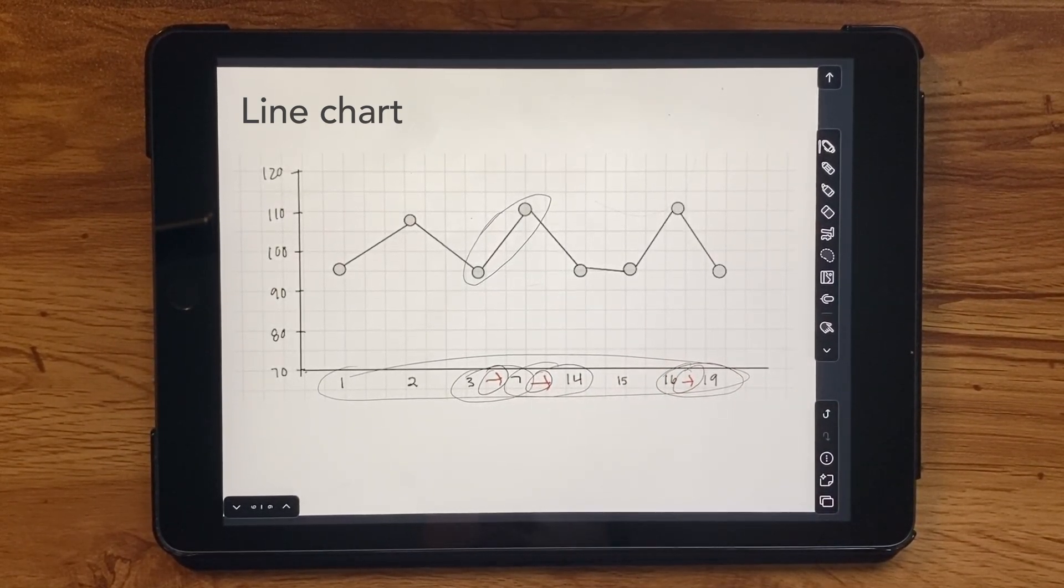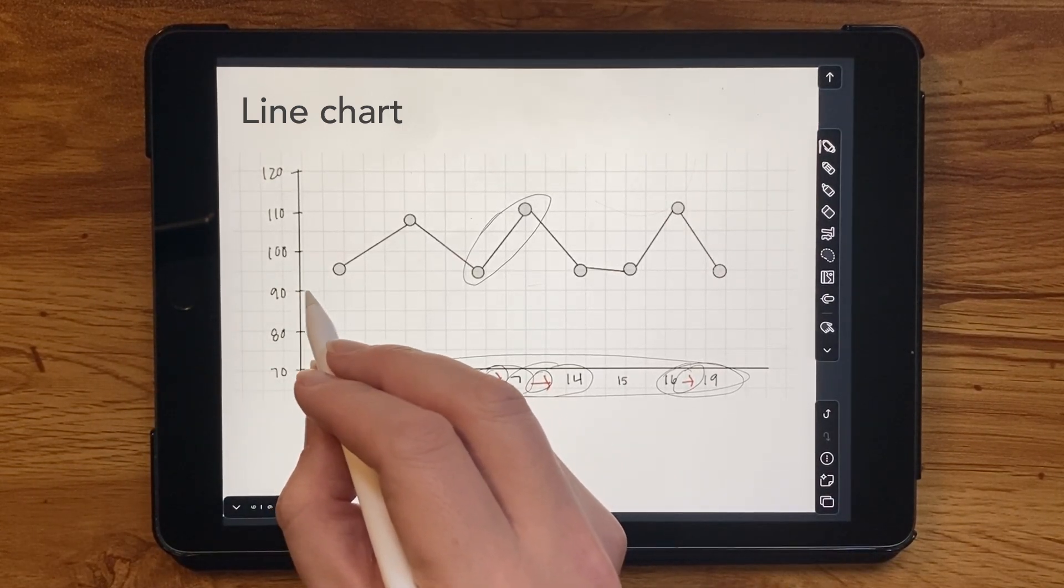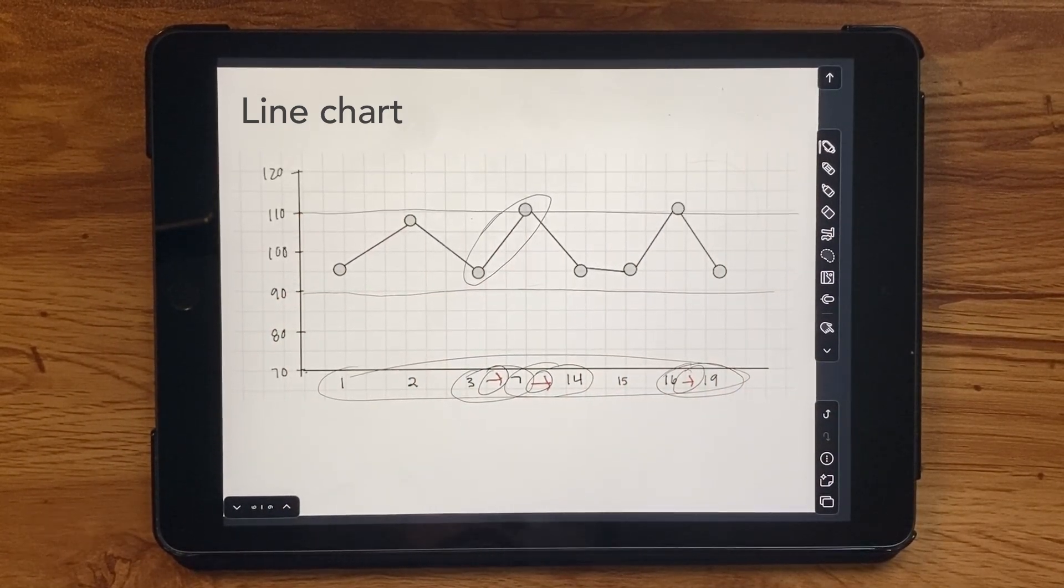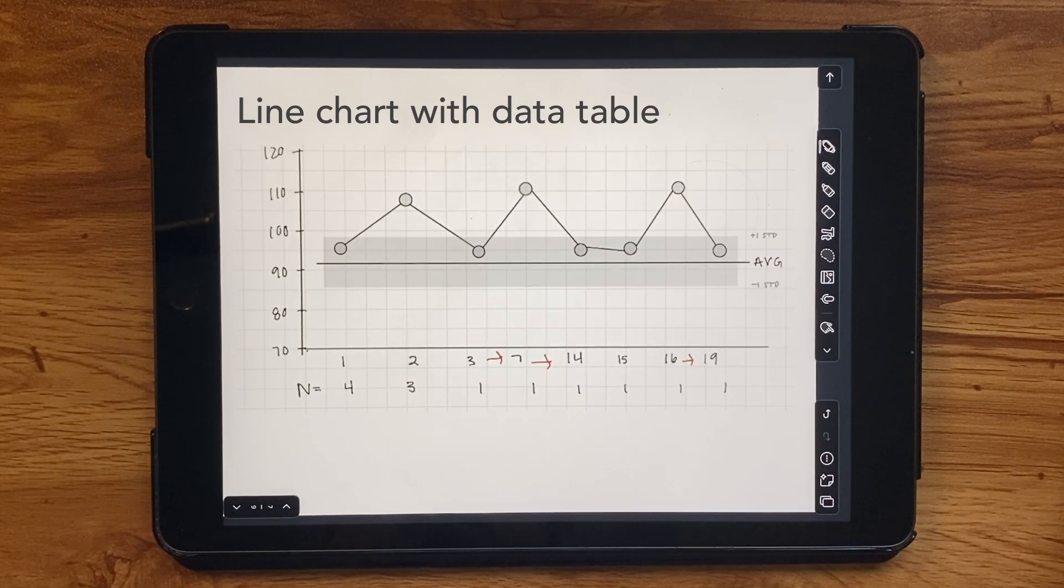One benefit of plotting the averages rather than individual observations is that I created a lot of space on the chart. I can use that space now to add reference lines, additional context for the overall study average and standard deviation. With this additional space, we can also afford to add a little more detail back in with the number of observations for each day. Here's a sketch of how that might look. I like this view, and I propose to use this for my finished version, creating it in my tool, Excel in this case, giving myself a reminder as I do so to use those regular time intervals. And here is the final version.